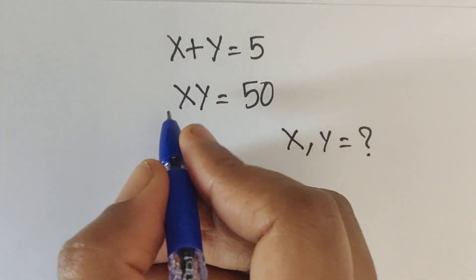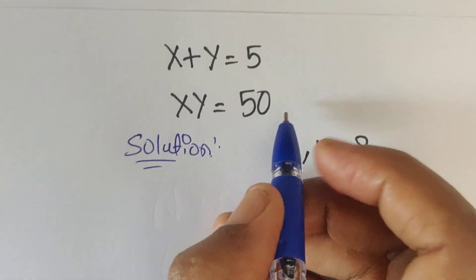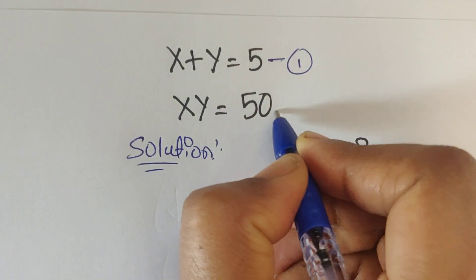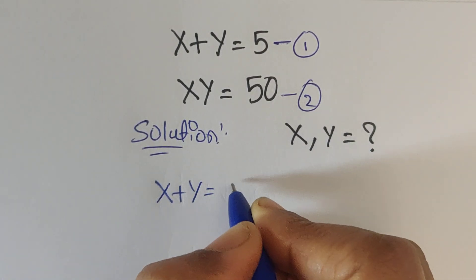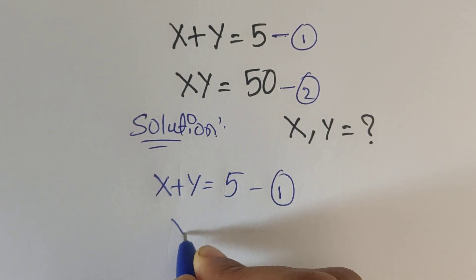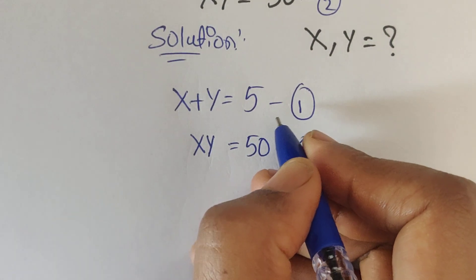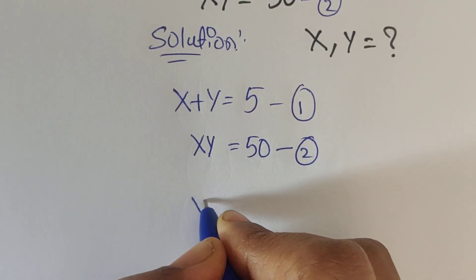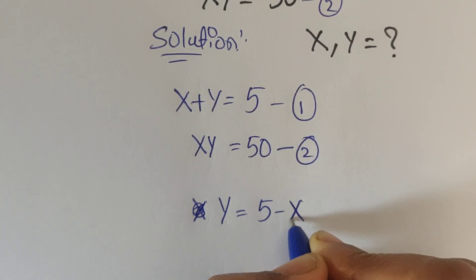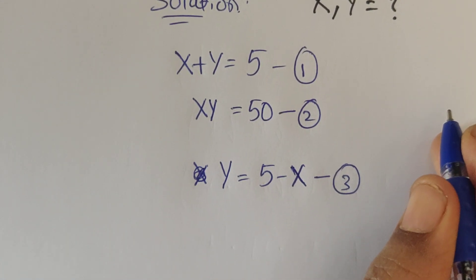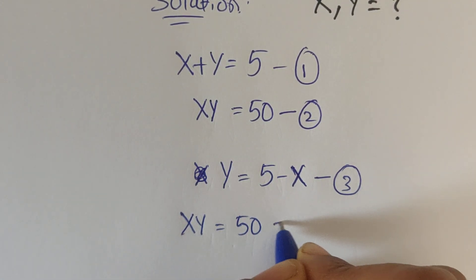So how do we solve this problem? First, we consider x plus y equals 5 as equation 1, and x times y equals 50 as equation 2. From equation 1 we can write y equals 5 minus x, and let us consider this as equation 3.